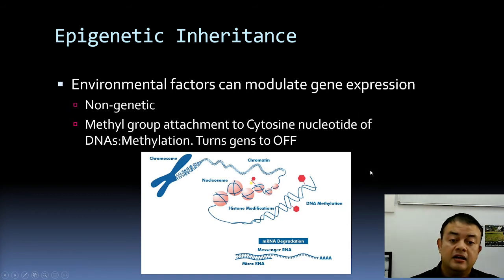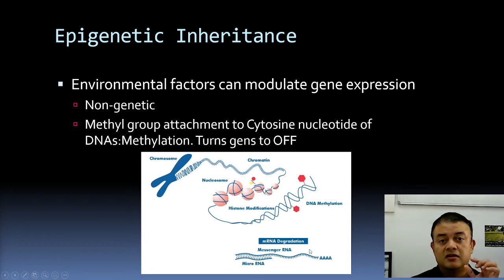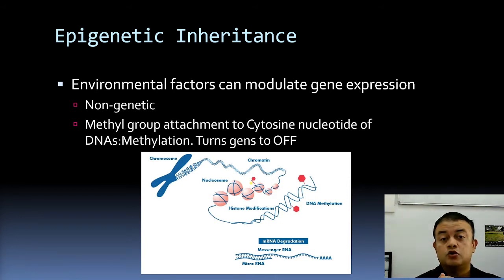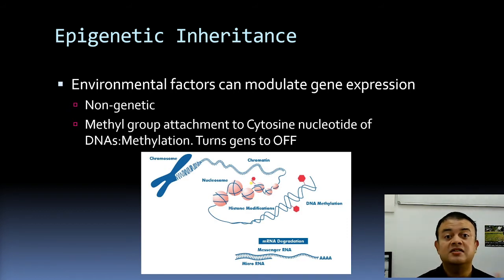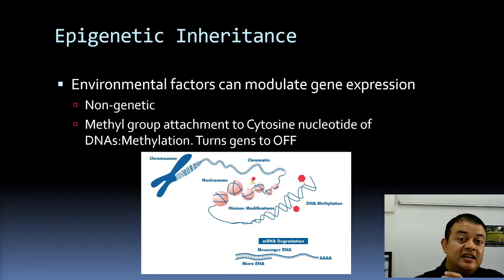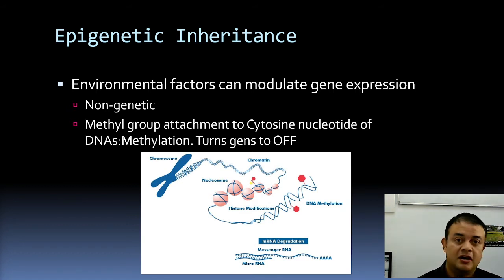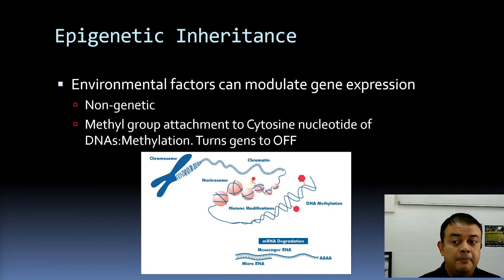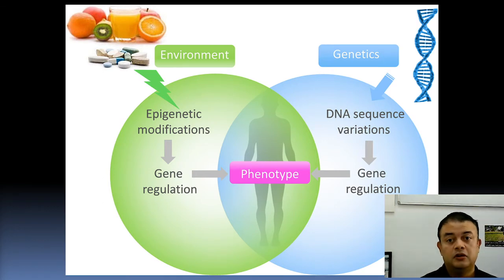The third epigenetic mode is mRNA degradation by small interfering RNA or micro RNA. Micro RNAs are small circulating RNA molecules that can complementarily bind with mRNA, causing it to degrade so that translation doesn't happen. The mRNA has already been transcribed, but after transcription it gets degraded by this micro RNA, thereby controlling gene expression. Unless translation happens, you cannot say the gene has been expressed.